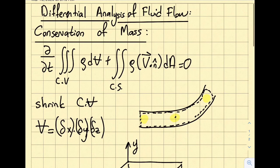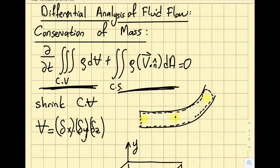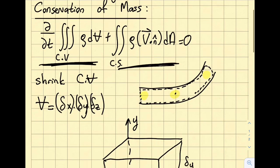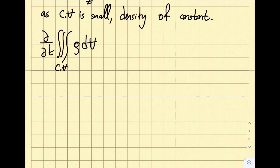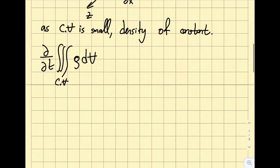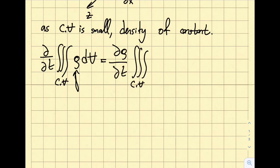Let's analyze the terms of the continuity equation one by one. The first term says it is ∂/∂t times the integral over the control volume of ρ dV. Since density is constant over the tiny control volume, I can take it out, giving ∂ρ/∂t times the triple integral over the control volume of dV.